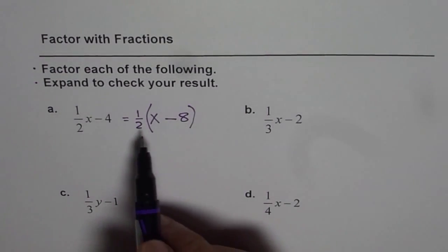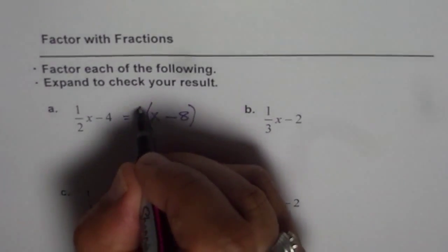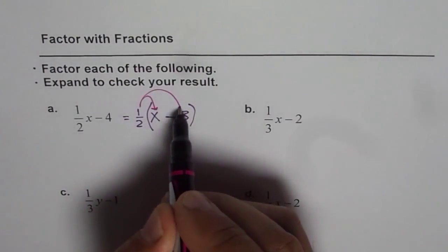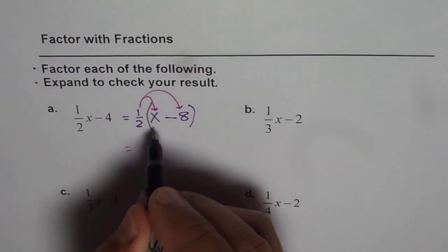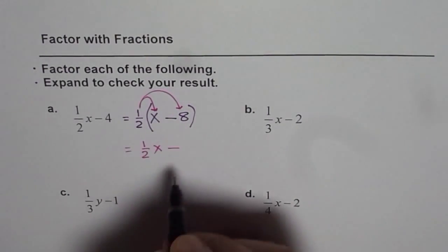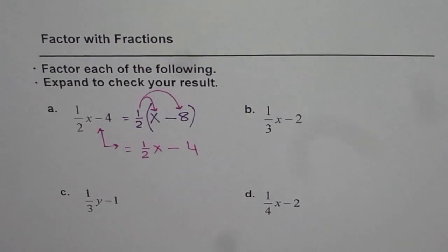Let us check if this is right or not. So to check, we will expand using distributive property. We will multiply x with 1/2 and minus 8 with 1/2. What do we get? (1/2) times x is (1/2)x, and half of 8 is 4. So we get the original expression.